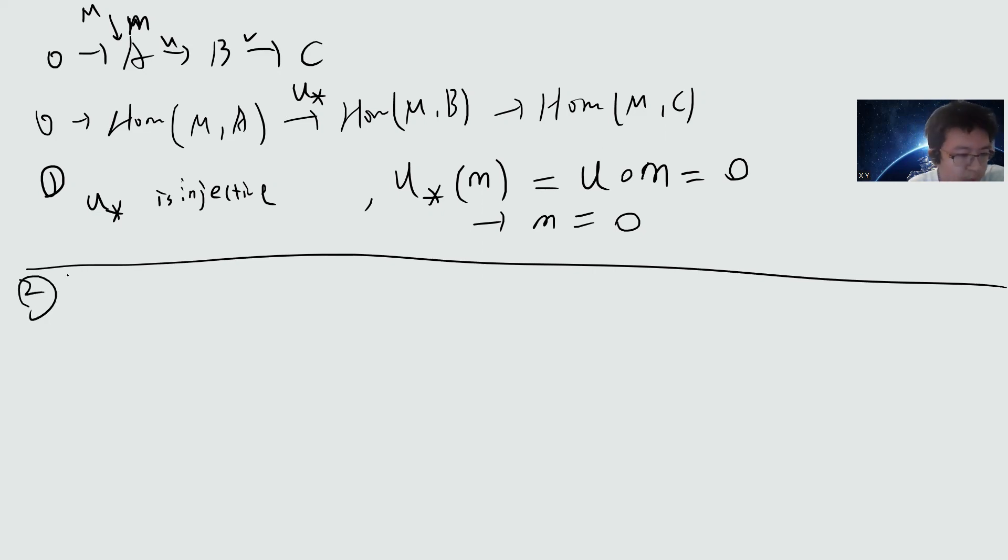Second, we want to prove that the kernel of V* is the same as the image of U*. So the first direction, which is simple, is that image is a subset of kernel. So this one is simple.